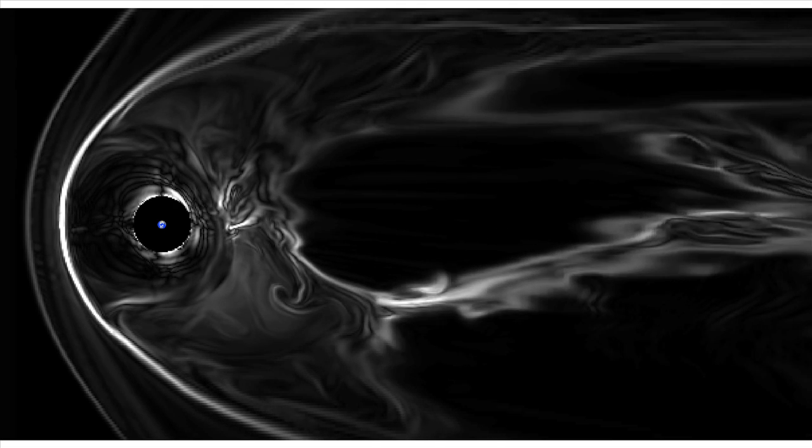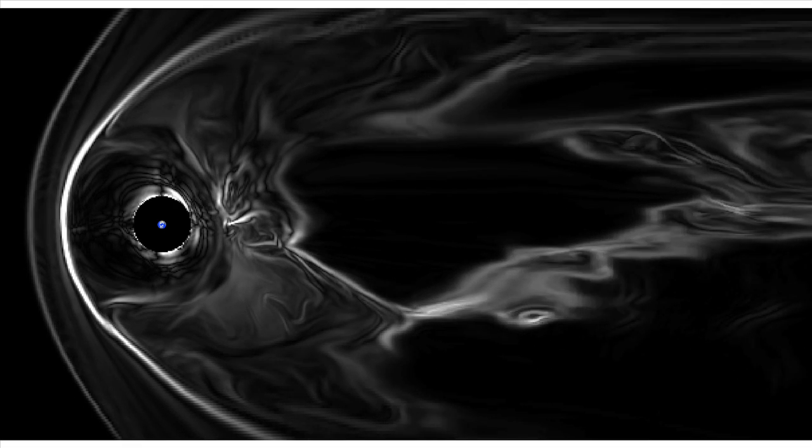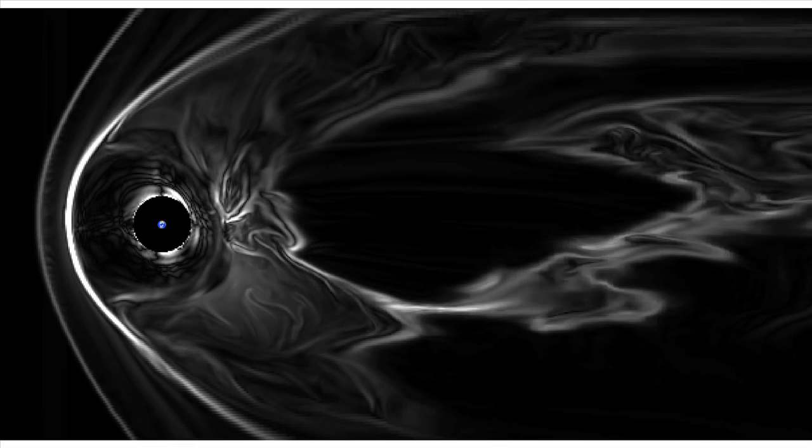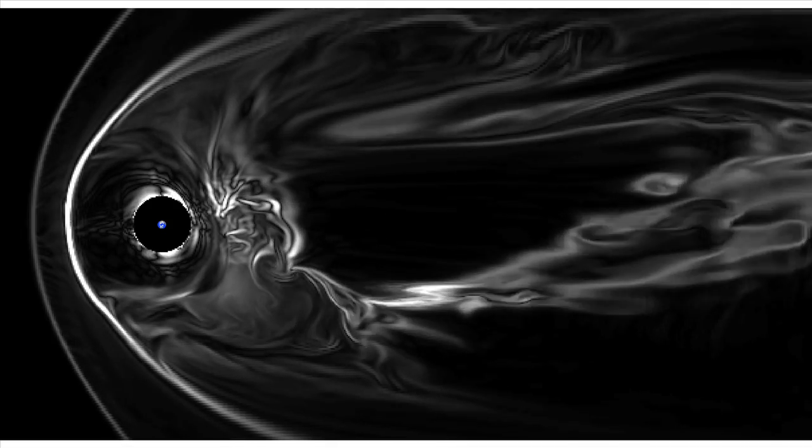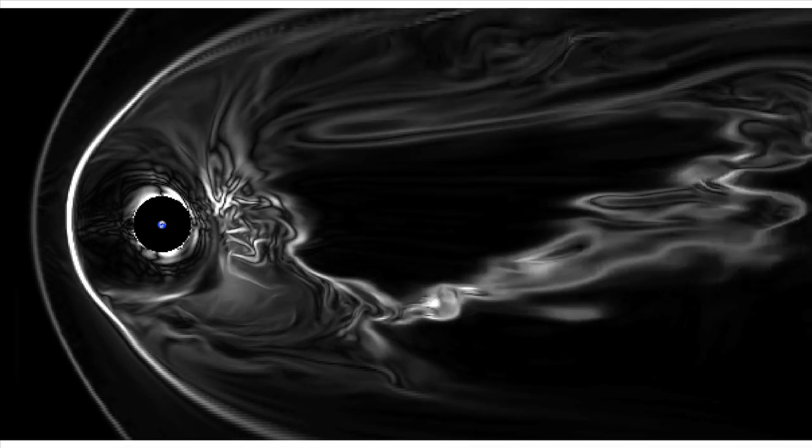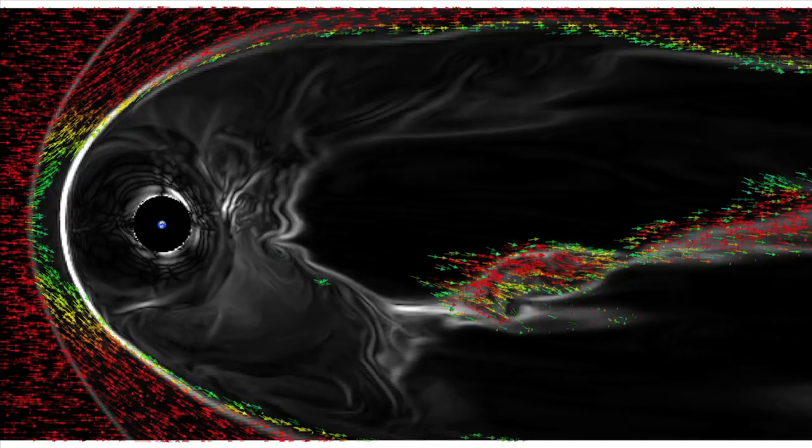The wispy white structures that you see are regions where energy is being released from the magnetic field and converted into accelerated plasma flows. We're now looking at flows within the simulation.